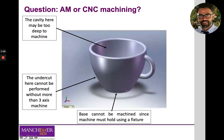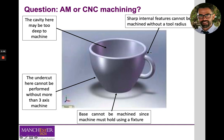The base could also be a challenge because it is normally attached to the building platform, and if you wanted to machine it you would have to turn the cup around and machine it in two different stages. Also, sharp internal features cannot be machined without a tool radius. Because of these geometric challenges, completely disregarding economic aspects, additive manufacturing would be better suited for this cup.